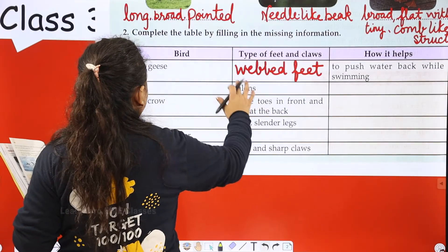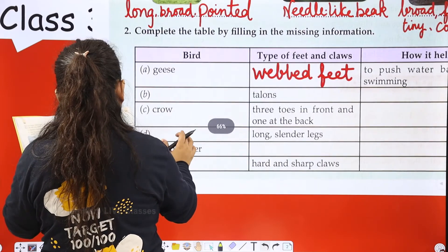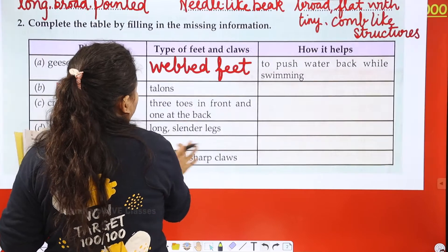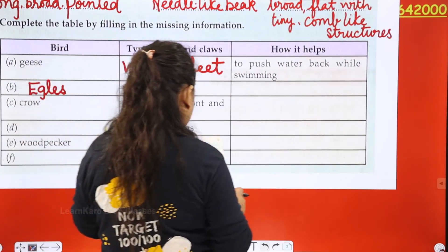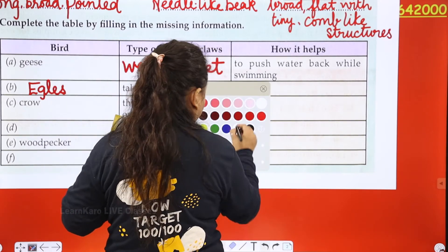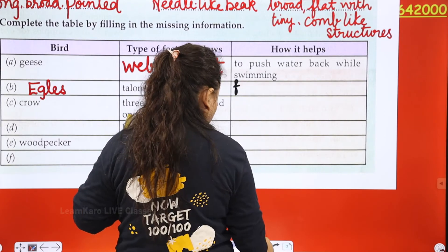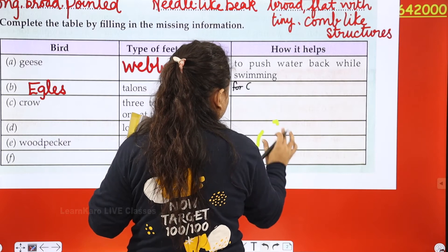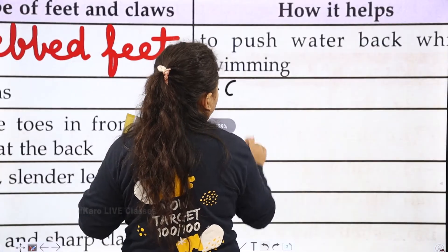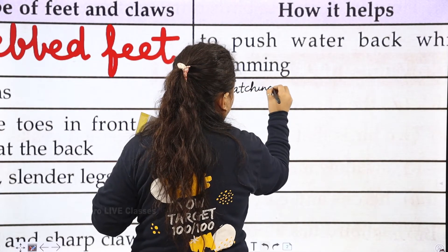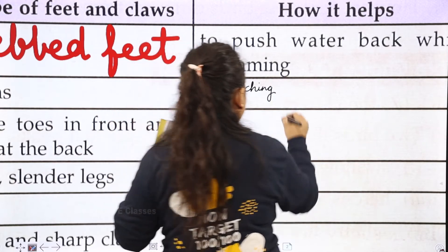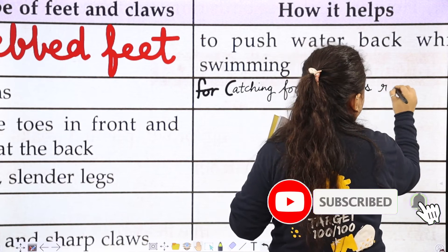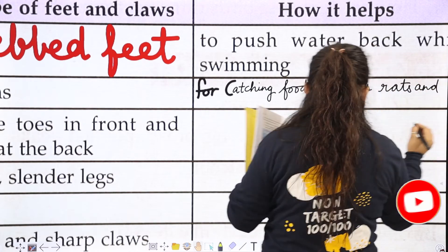Next is talons. The bird is eagle, because eagles have sharp claws called talons. How do talons help? They are used for catching food such as rats and small birds.